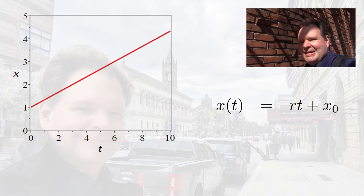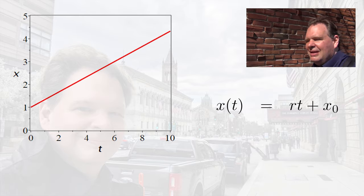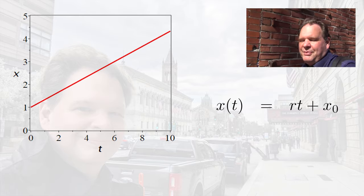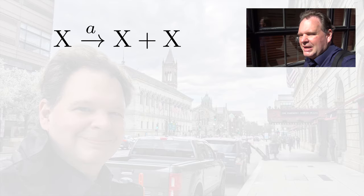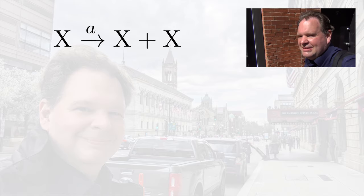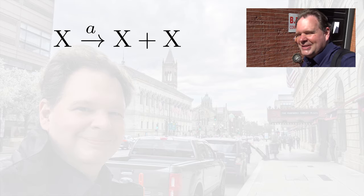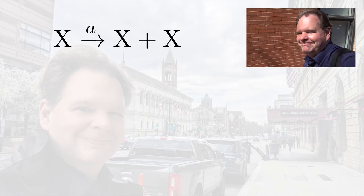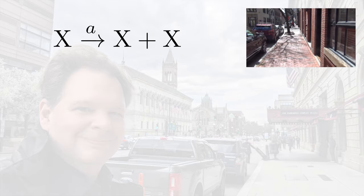What this example shows is that a constant rate of change leads to linear growth — or if the rate were negative, to linear decline. Let's consider a more interesting example, such as a population of bacteria growing in a petri dish. This is more interesting because the bacteria are not produced from some external source — they divide themselves. We can describe this by a reaction diagram: for every bacterium x that we have, there's a chance that it divides into two bacteria, and this division happens at a rate A per bacterium.